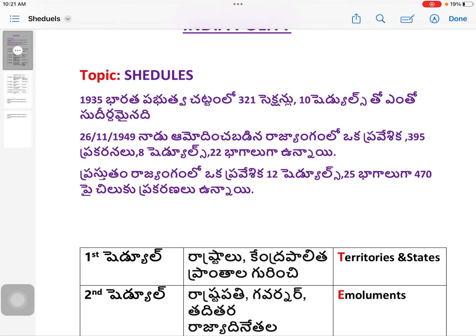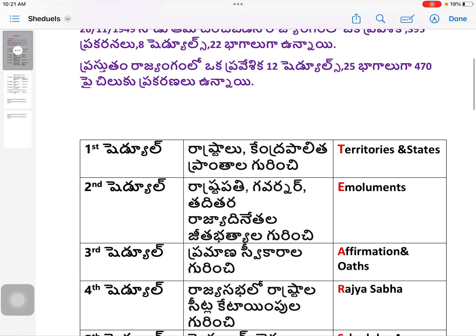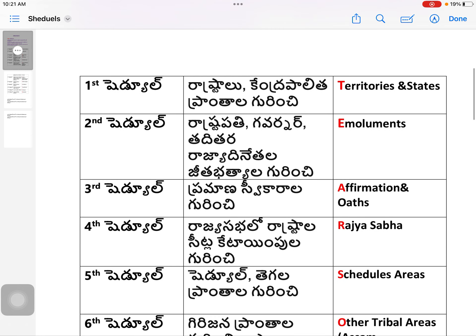So in 1935 we had 10 schedules; in 1950 we had 8 schedules; and now we have 12 schedules. The pattern is: 10, 8, 12. To remember all 12 schedules, I'll give you a mnemonic: save it and remember.